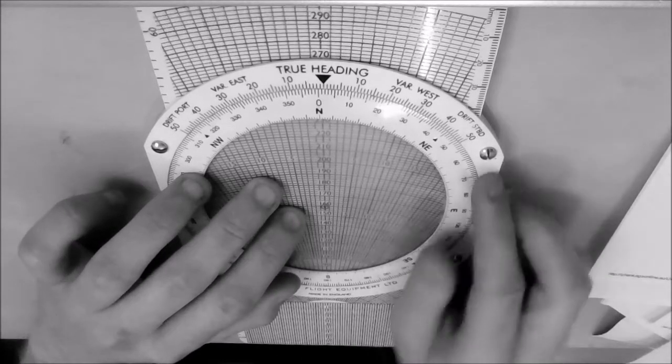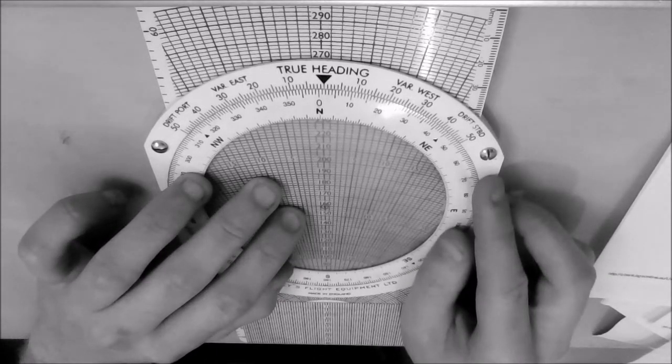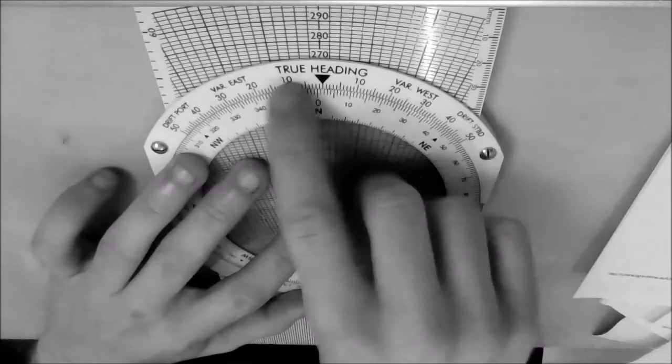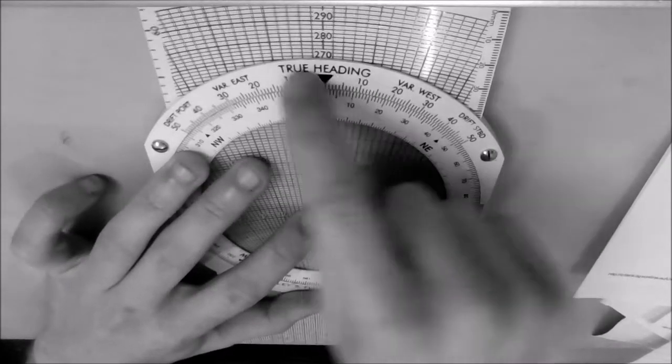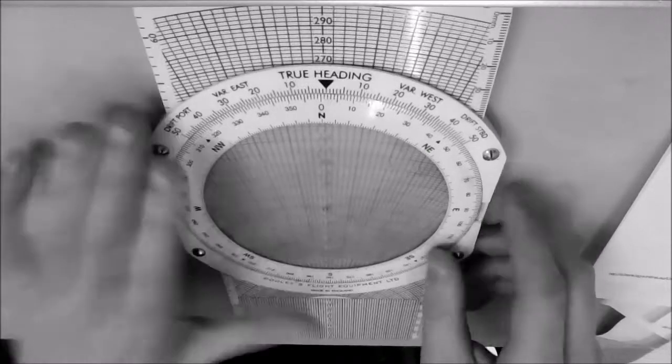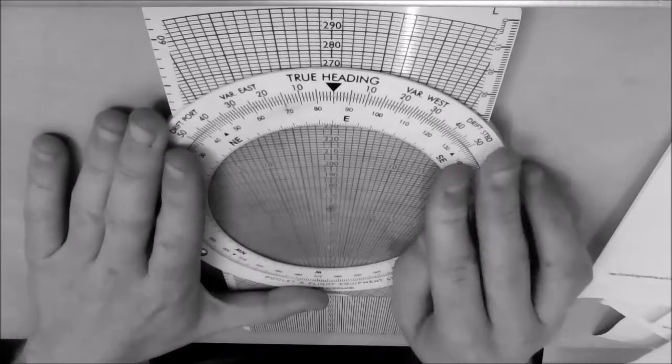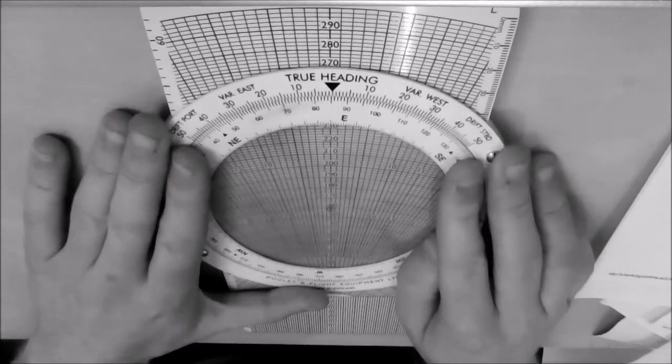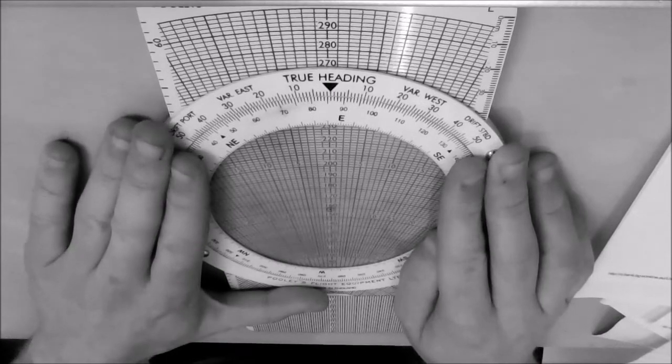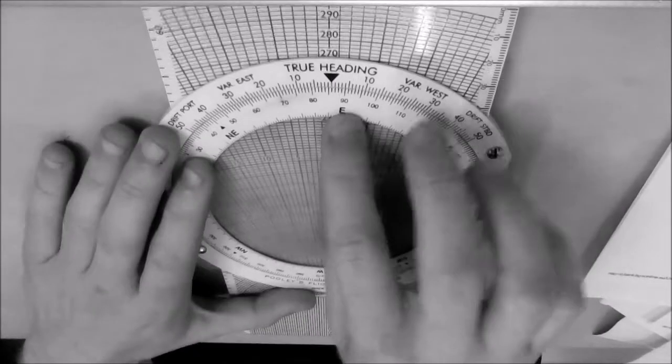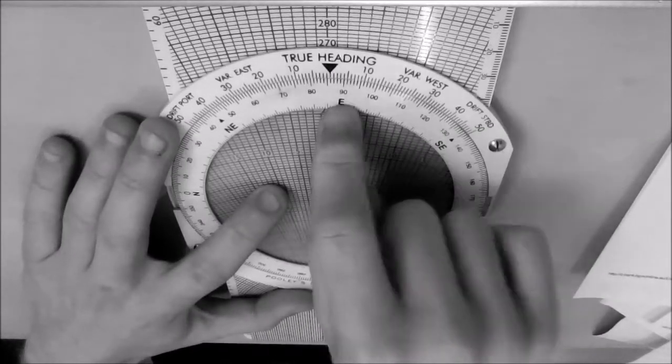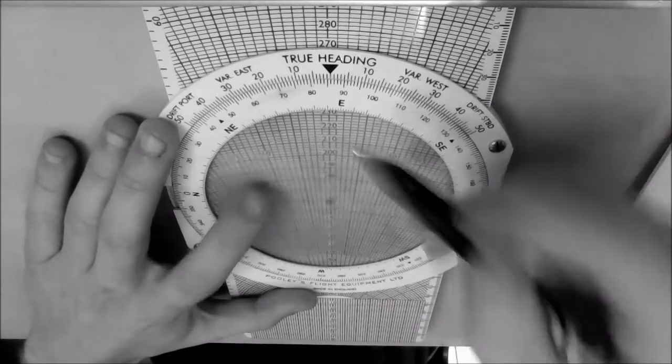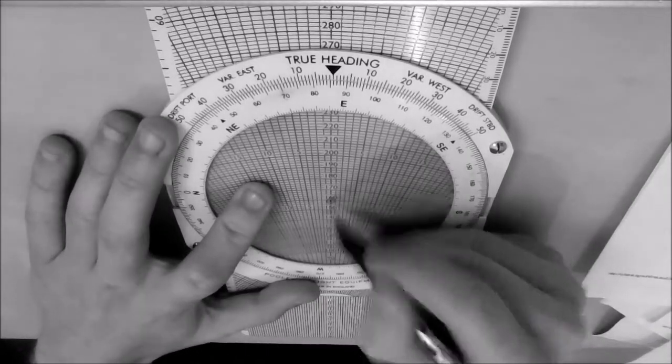What we'll then do is select our heading. And you see under the top here it says true heading. You should never have anything but the heading under this point. So rotate your CRP5 to 087. Absolutely essential, you put the heading under there, not the track. So we've got 087 at 160 knots true airspeed.